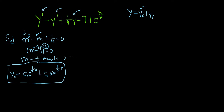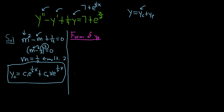Now we need to find yp. I like to write ½x rather than x over 2 to avoid confusion — they're the same thing. For the form of yp, it's a process I do in steps: first make an initial guess, and then if necessary, a modified guess.